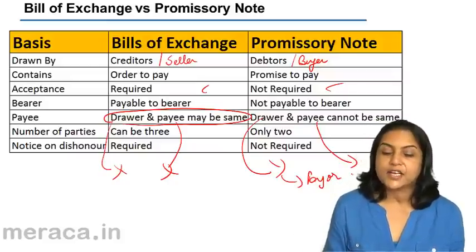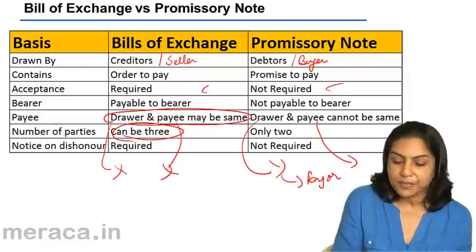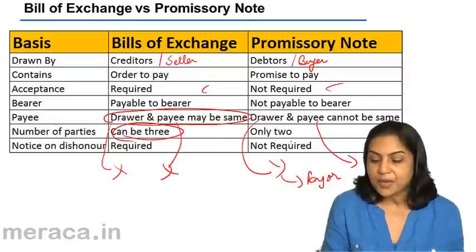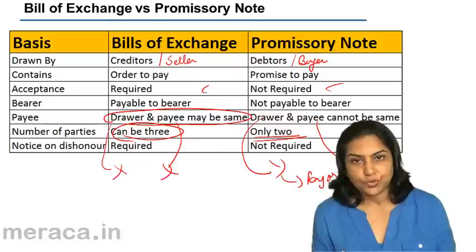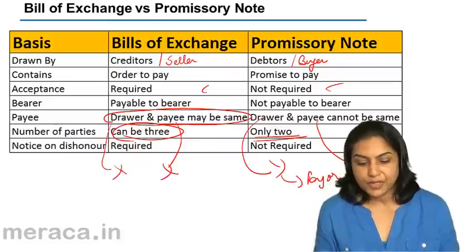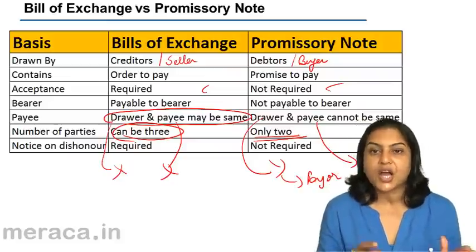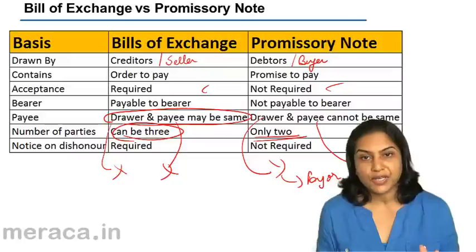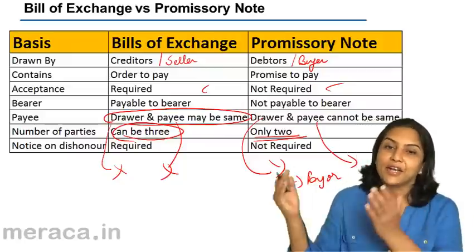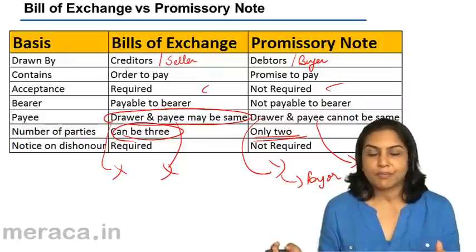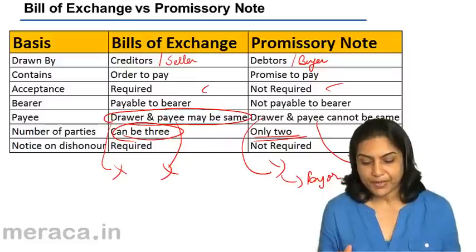Regarding number of parties: there could be three parties in case of a bill of exchange, but in a promissory note there could be only two. After a bill of exchange or a promissory note comes into existence, both can be endorsed by the person who is entitled to receive payment.